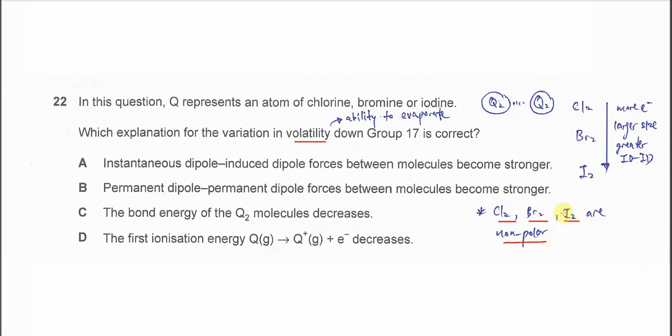When going down the group, we know that the size will become larger because of more electron shells. When the size is larger, then the id-id forces are greater.